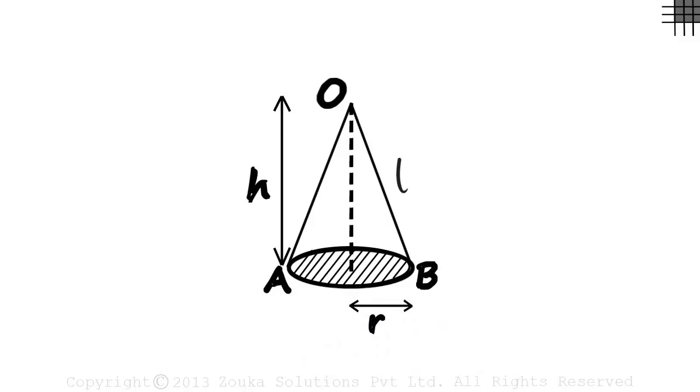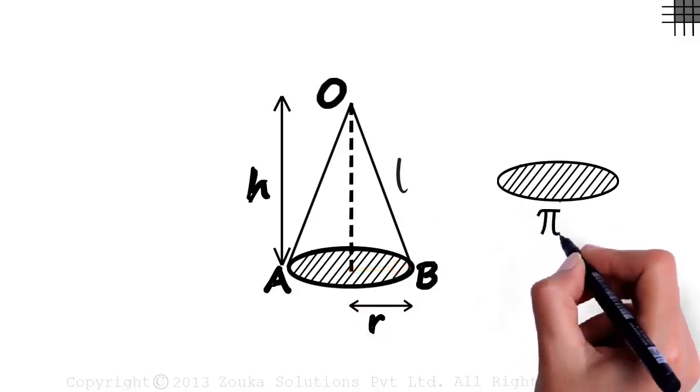First let us consider the circular base. The radius of the circular base is R so its area will be pi r squared.